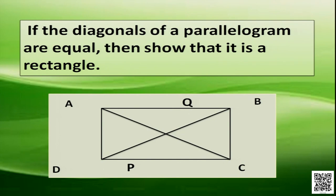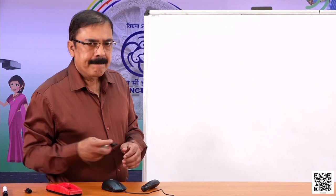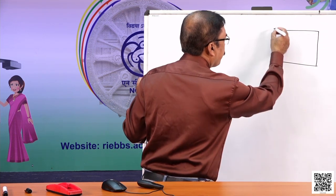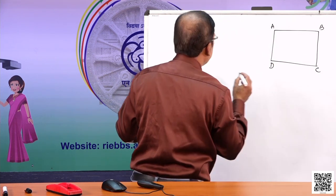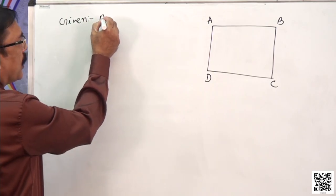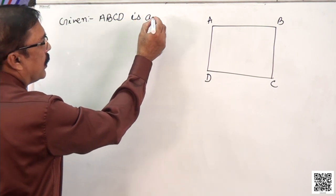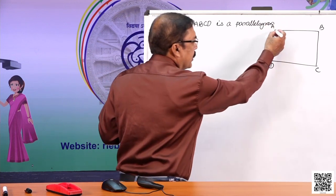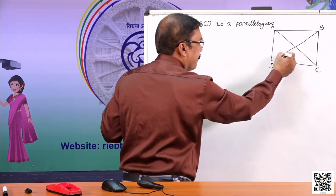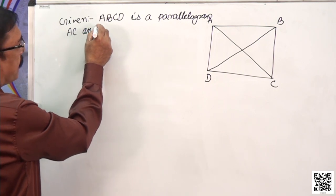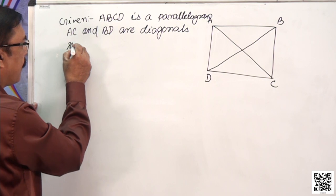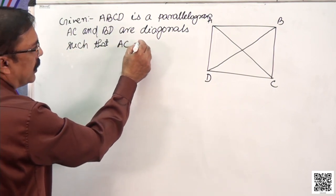If the diagonals of a parallelogram are equal, then show that it is a rectangle. This is a parallelogram ABCD. Given: ABCD is a parallelogram such that AC is equal to BD.